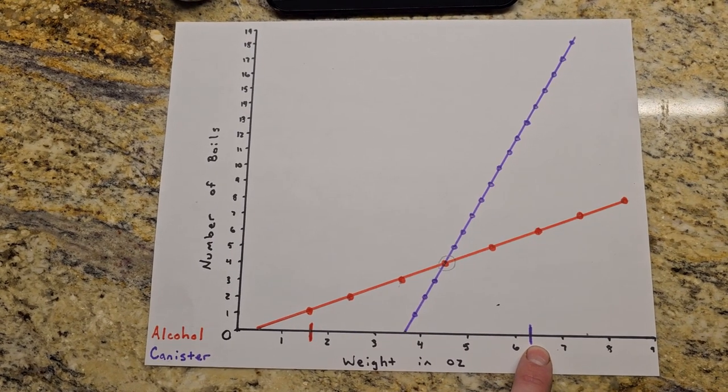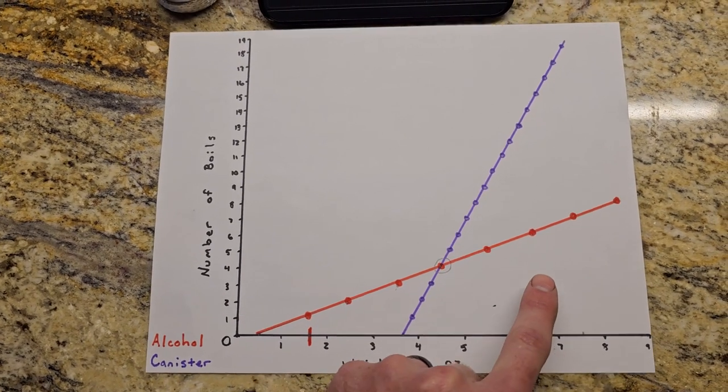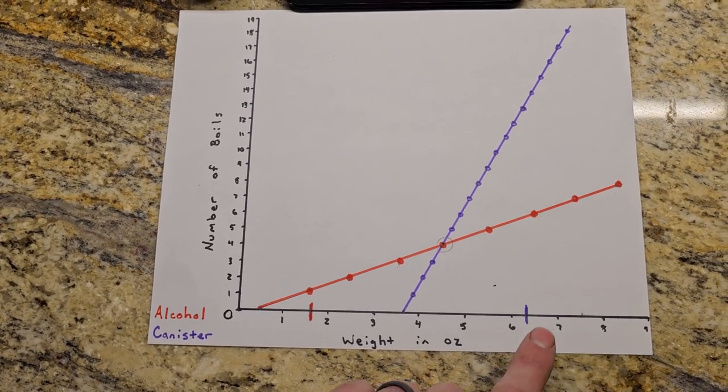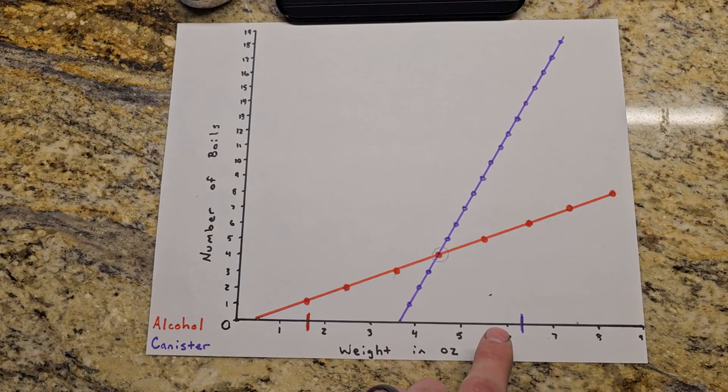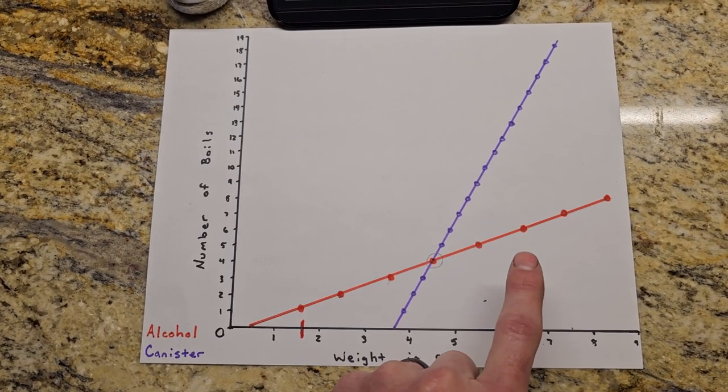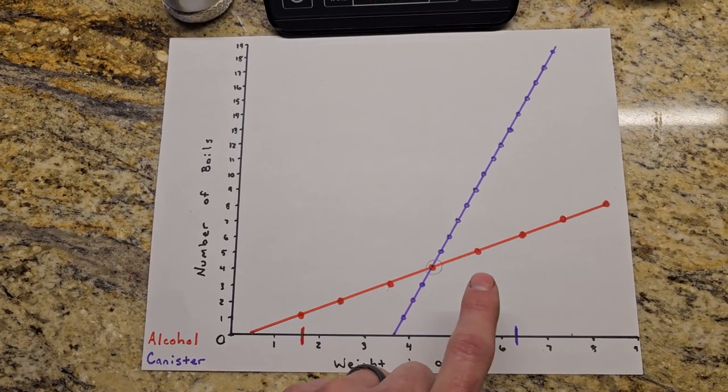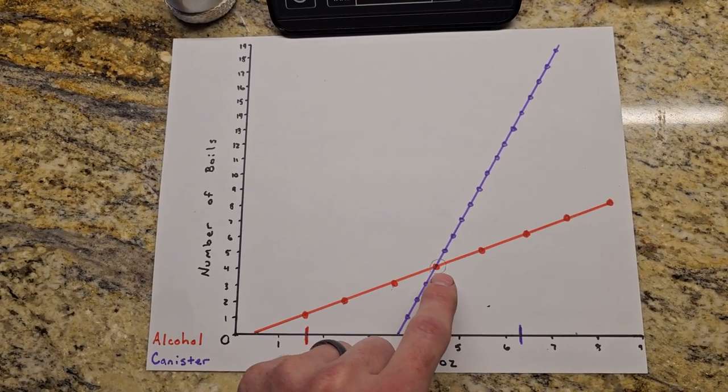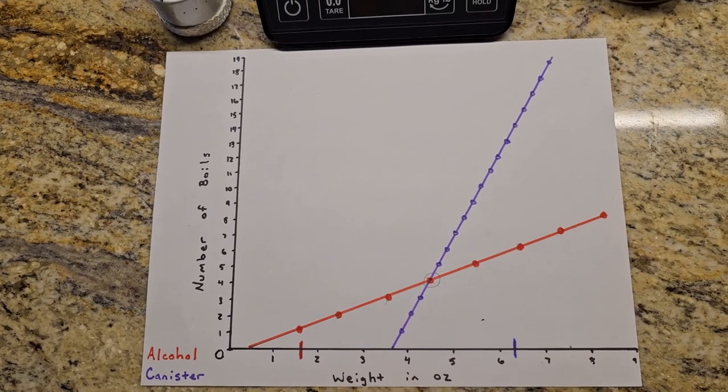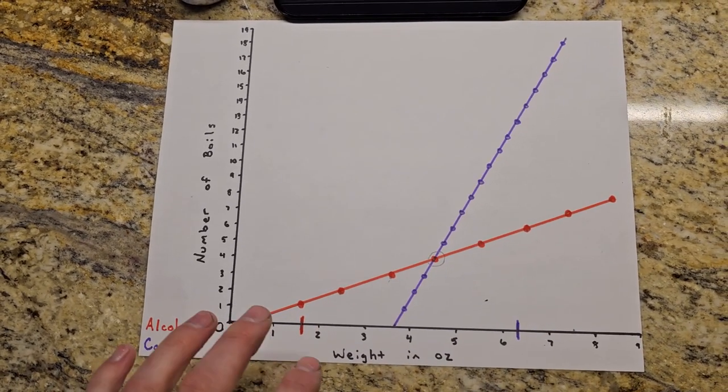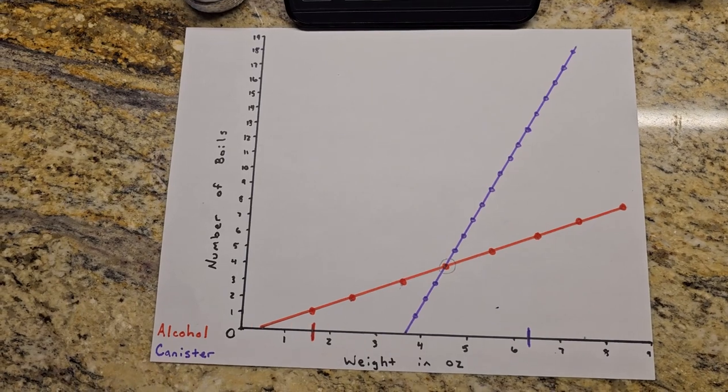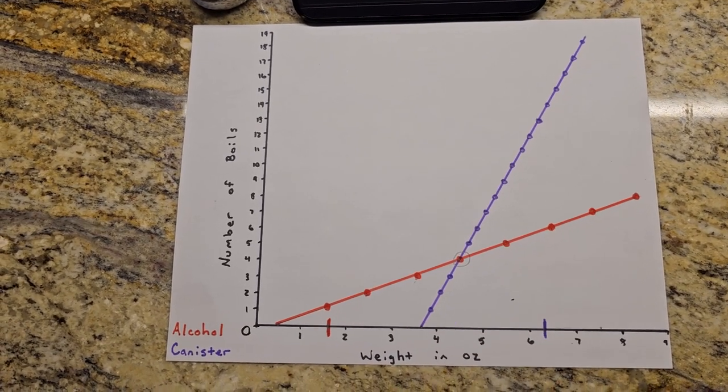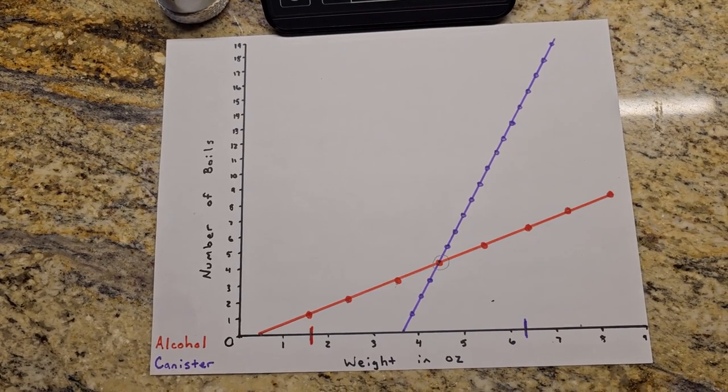So that will bring my overall way farther over here once I factor in the weight of the stove itself, whereas I'm going to end up getting somewhere between five and six boils out of the alcohol setup before my lines would cross right here and the canister would end up being less weight. So anywhere between one, two, and three nights out of this alcohol setup is overall going to be a lighter weight than the canister fuel setup.